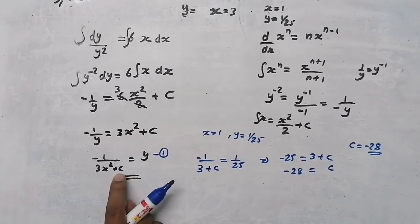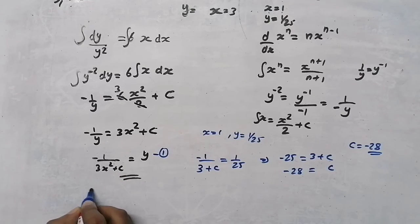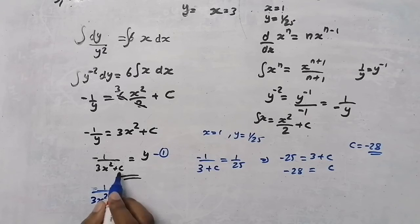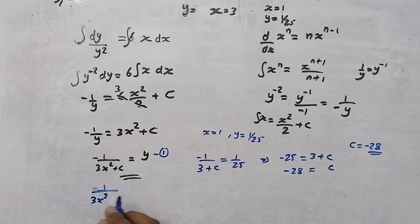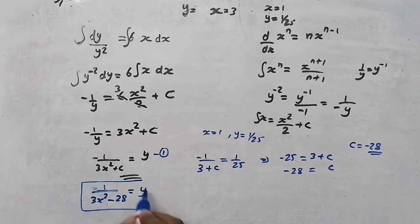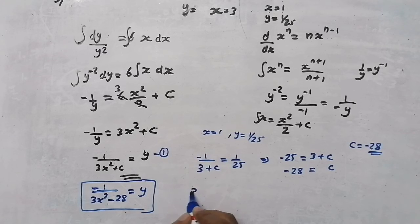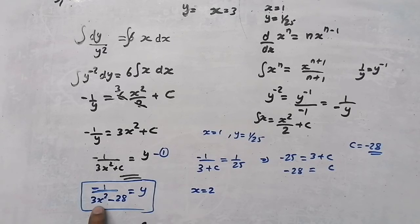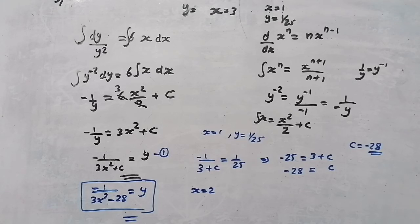Now I substitute c equals minus 28 back into the equation: y equals minus 1 divided by (3x squared minus 28). This is the final answer — a complete equation for y. Now if someone asks for the value of y when x equals 2, I can substitute directly and find the answer. Thus we have found the solution by the variable separable method.